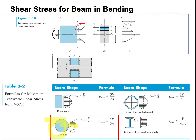The bending moment causes normal stress and the shear force causes shear stress. So at a point on the shaft: if it's at the top, you only have normal stress from the bending moment and the shear stress is zero. If you're right in the middle, the normal stress is zero but shear stress is at its maximum. If you're somewhere in between, you have both normal and shear stress combined.